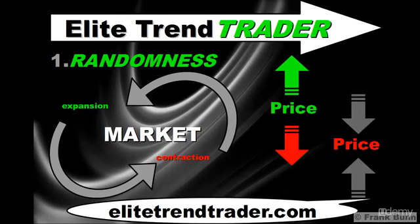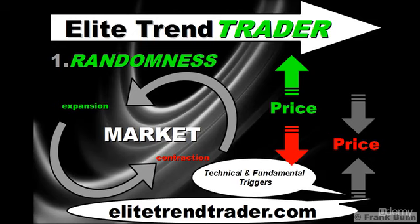After a time, in either direction, prices will hit an equilibrium whereby sellers meet buyers and the market consolidates in a contraction phase. Contraction is characterized by range-bound, light-volume trading as price oscillates in the consolidation. Following this, some catalyst — either technical or fundamental — will cause price to enter the expansion phase once more. The cycle continues on and on, as human fear and greed drive prices from consolidations through extreme highs and lows, cycle in and cycle out.